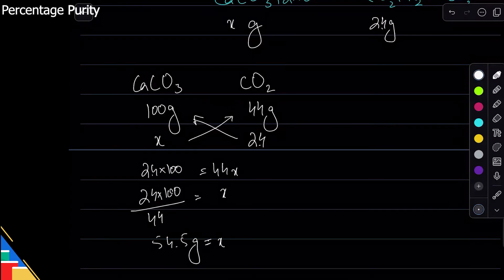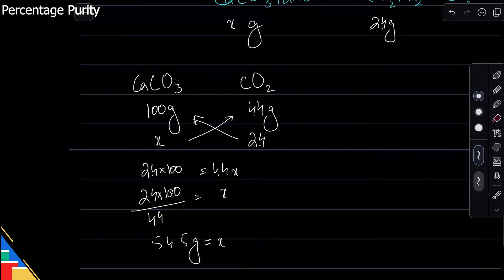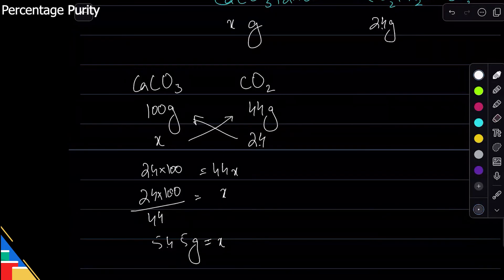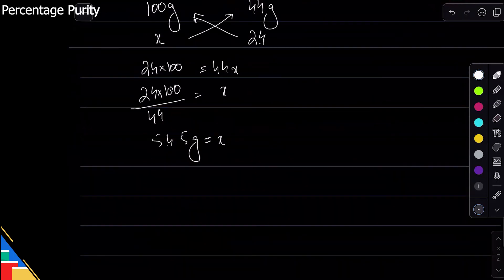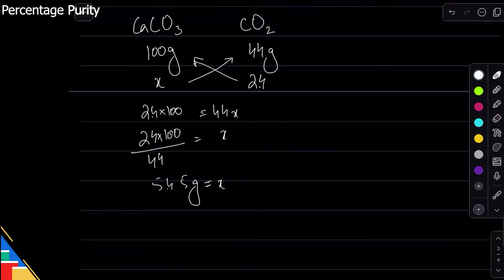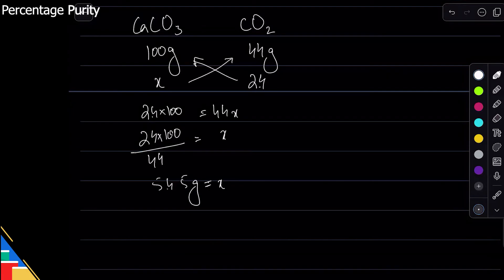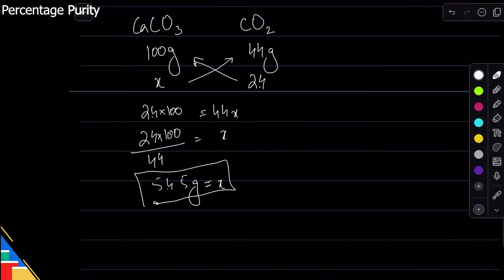Yeah, even that doesn't make sense. So it is 5.45 grams of calcium carbonate that should be having. And we started with 20 grams of that. Okay yeah, so we had 20 grams of limestone, but we can see that only 5.45 grams was calcium carbonate.